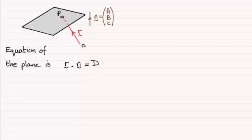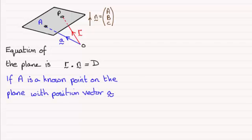Suppose we've got a point on the plane, a known point A with position vector little a. Then if that's the case, it must satisfy this equation. There must be a point where p is the same as a, so r would equal a. So if that's the case, we know that it will satisfy this equation. Instead of r we can write a dotted with the normal vector equals the constant d.